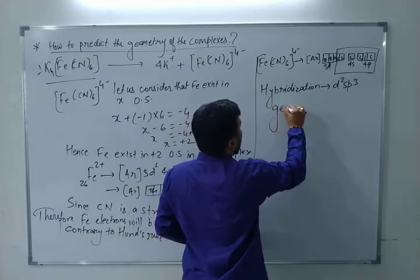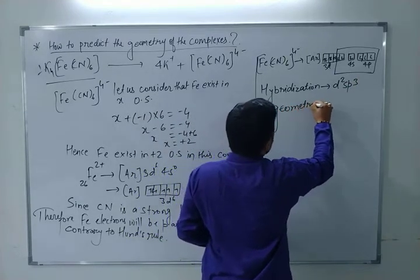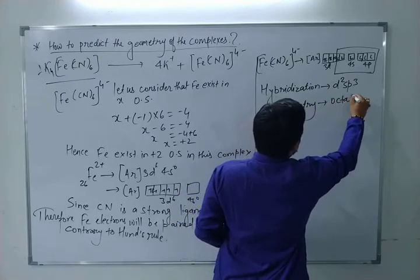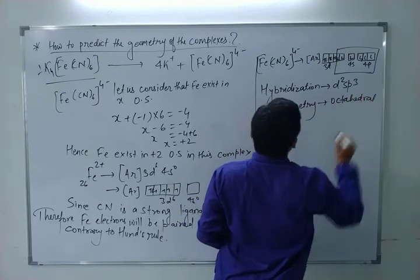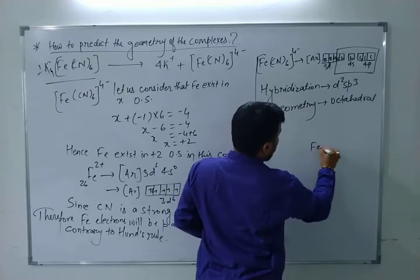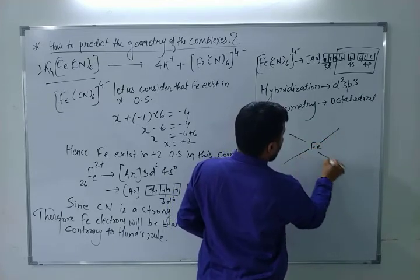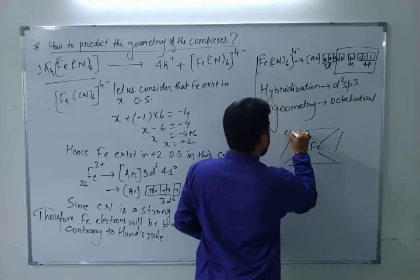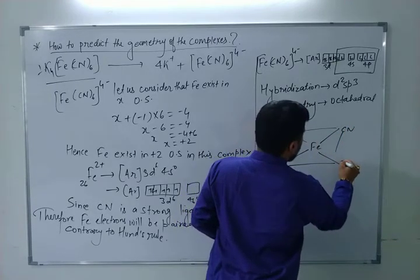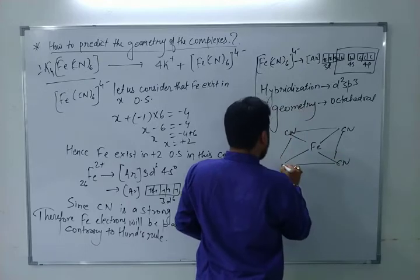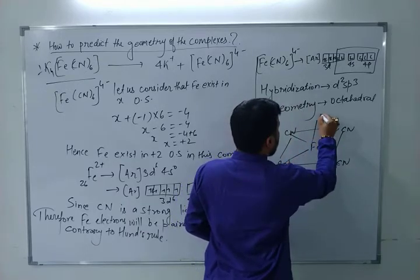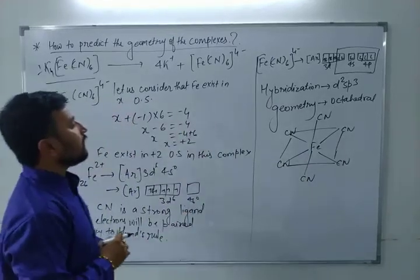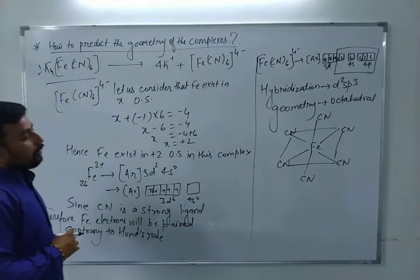So the hybridization is d²sp³. The geometry will be octahedral. You can draw it with Fe at the center and CN ligands at all six positions — one on each of the six octahedral directions: CN, CN, CN, CN, CN, CN.